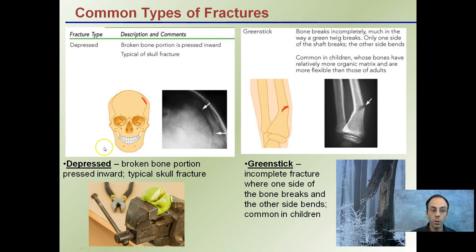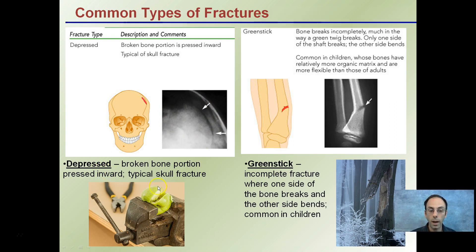A depressed fracture is one where the broken bone portion is pressed inward — typical in skull fractures. It can be very dangerous, especially with pressure on the brain or potential for bleeding. Like the apple in the vice shown here, the broken portion of the bone is being pushed inward.